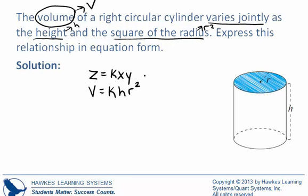Now notice that this is a very basic problem because it only asks us to express the relationship, which we have done. V equals k times h times r squared is the relationship that shows joint variation between volume and height and radius squared.